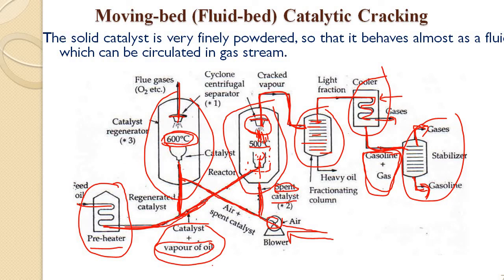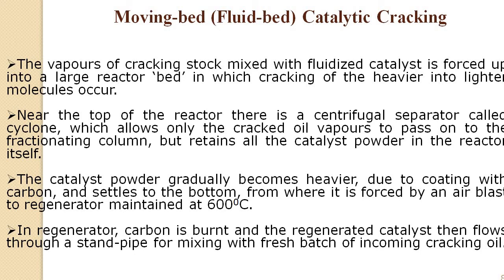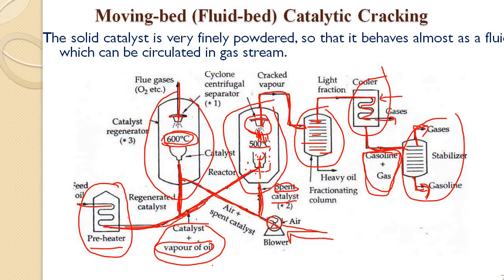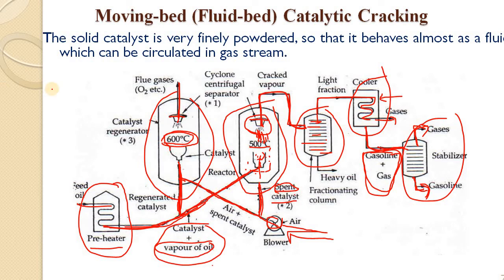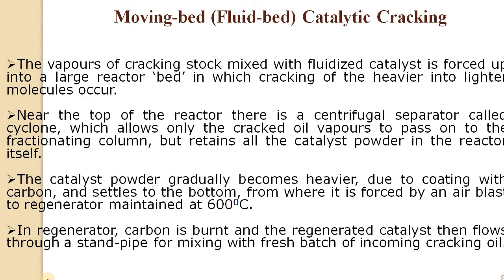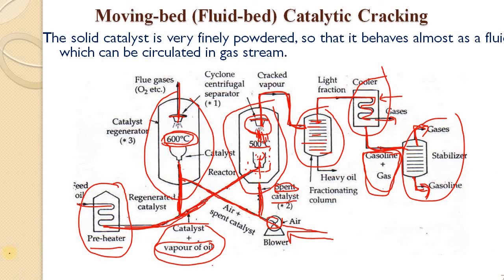Key points: the vapors of cracking oil mixed with the fluidized catalyst are forced up into the reactor, where cracking of heavier molecules takes place. Near the top of the reactor, the cyclone centrifugal separator allows only cracked vapors to pass to the fractionating column while retaining the catalyst powder. The catalyst powder gradually becomes heavier due to coating with carbon and settles at the bottom as spent catalyst. In the regenerator, the carbon is burnt off and the regenerated catalyst flows through a standpipe for mixing with the incoming oil.